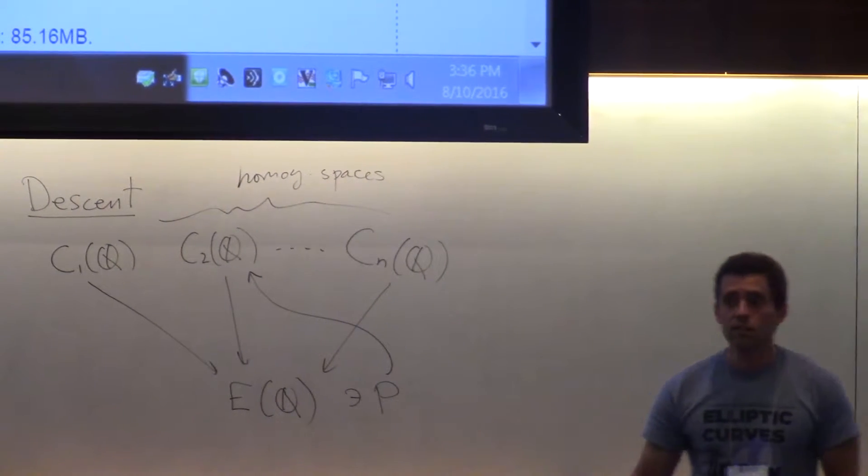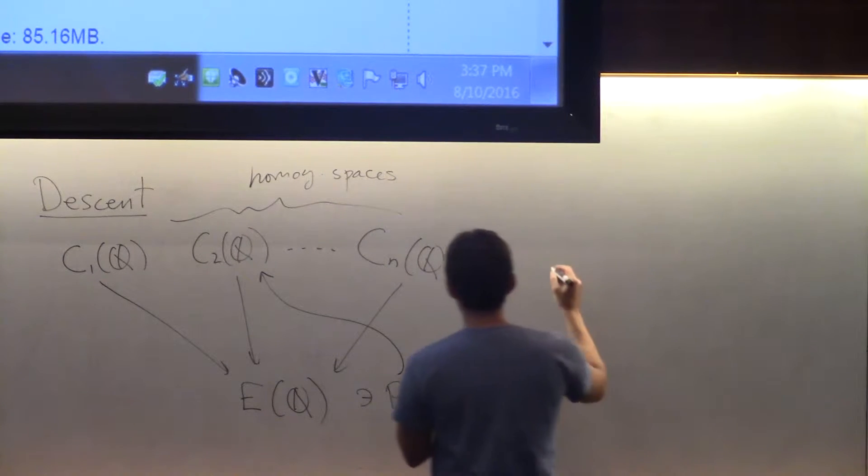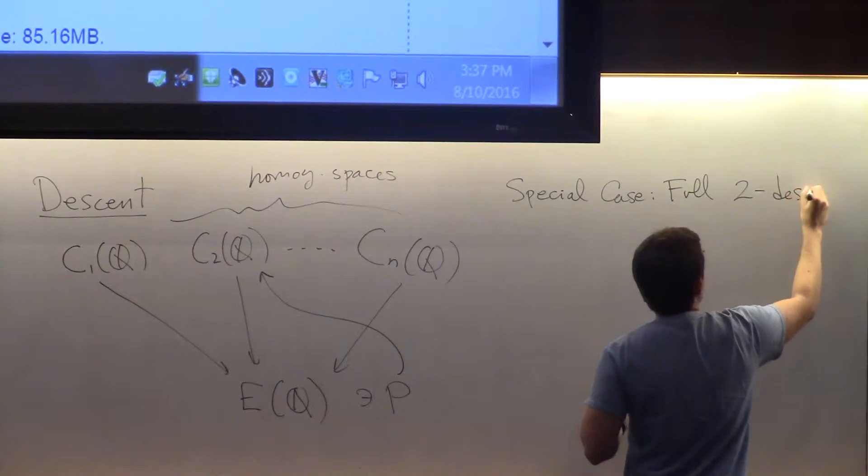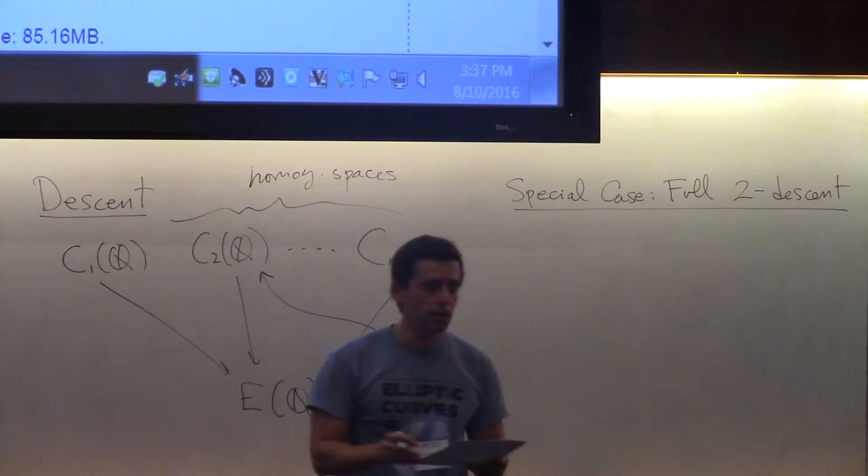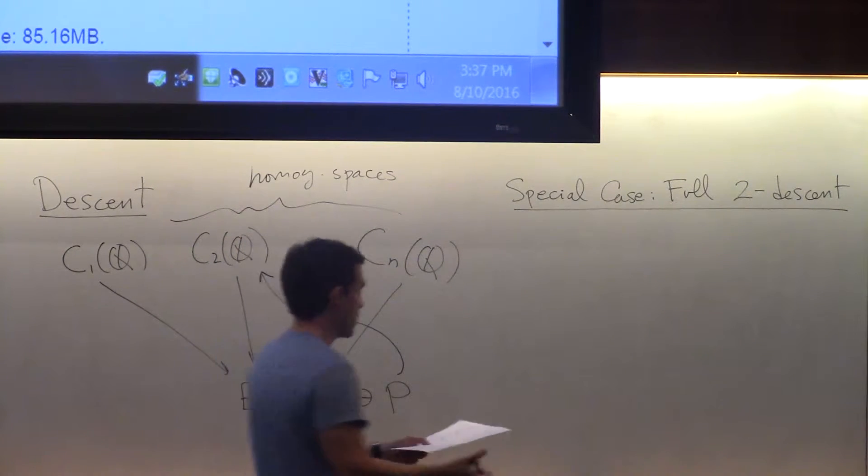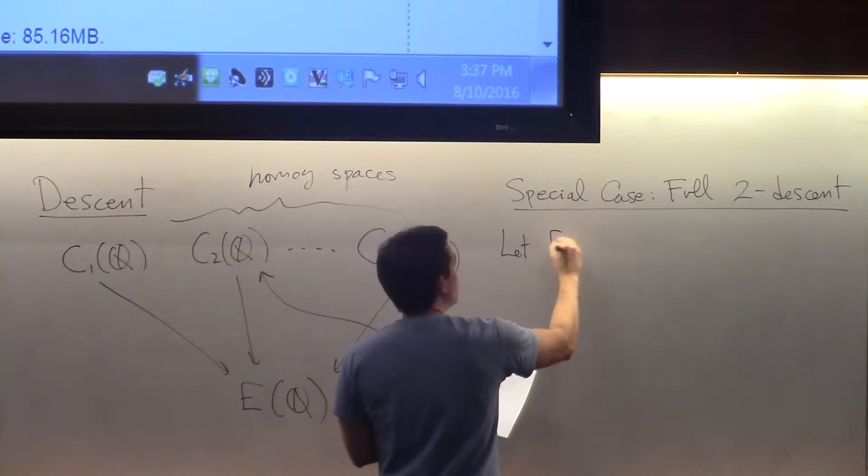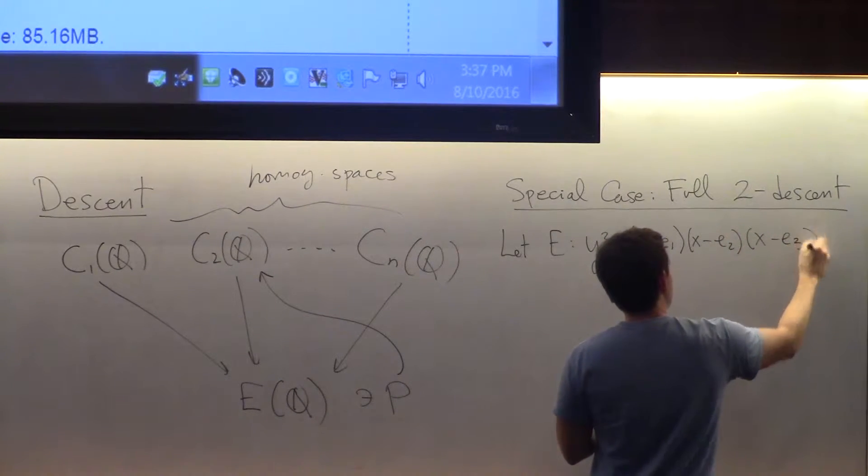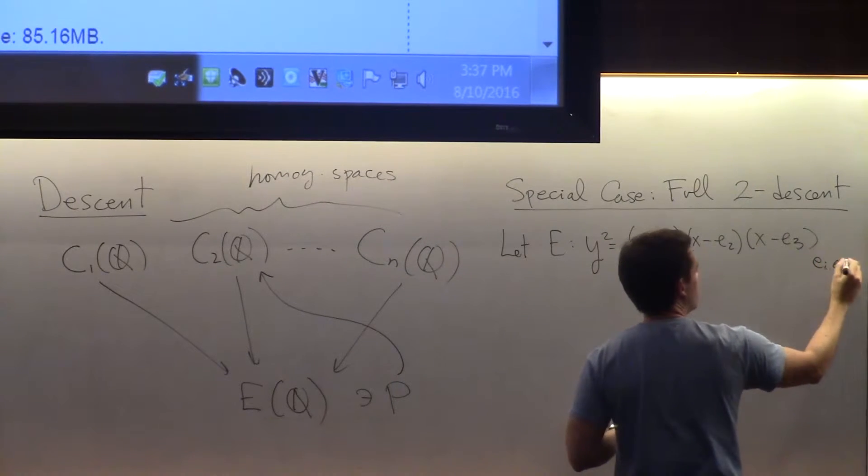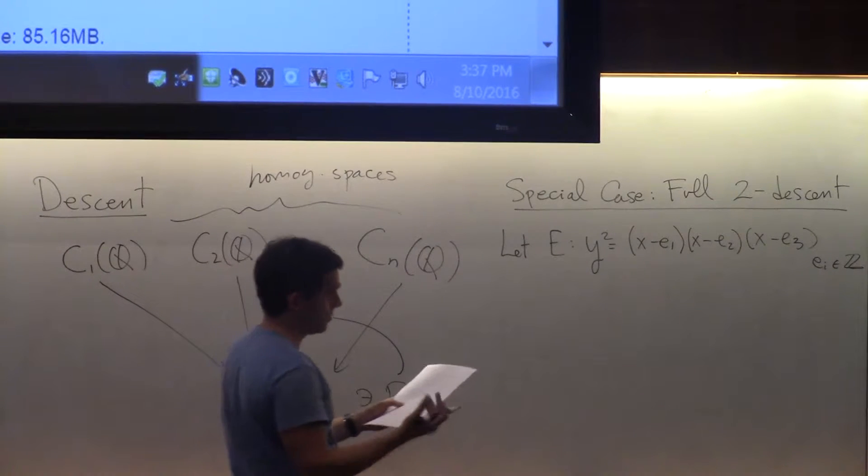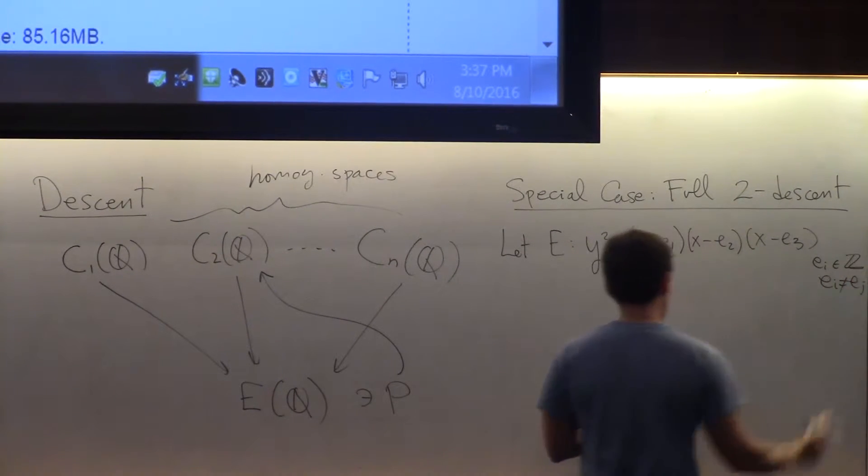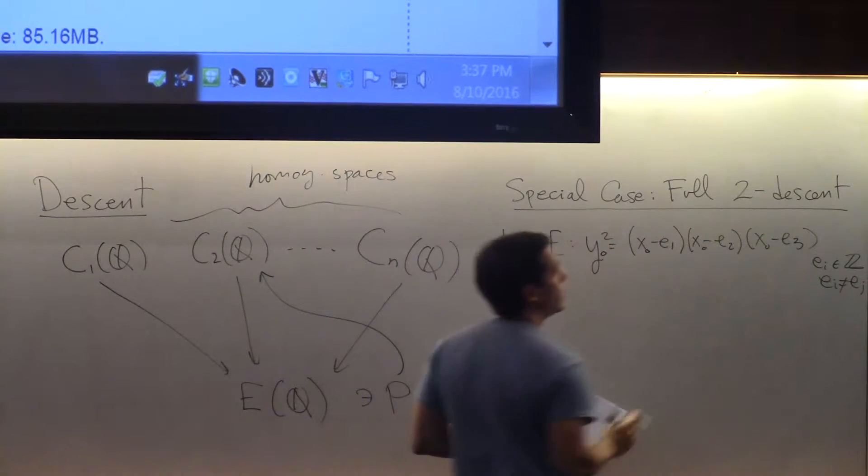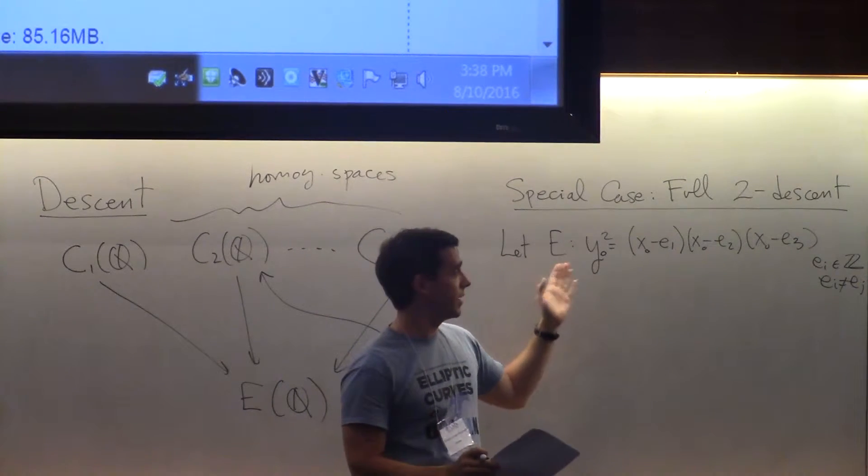As I said, there are several flavors of descents. The very most basic one is called a full 2-descent, and I'm going to do a poor job at describing it here. It's explained in more detail in chapter 2 of the notes, and there are actually some groups in that chapter. So full 2-descent means that I'm going to do it for elliptic curves that have a full 2-torsion defined over Q. So these ei's are going to be integers and distinct.